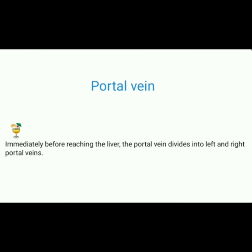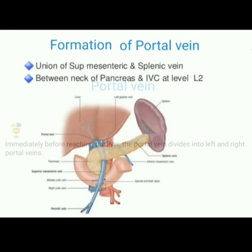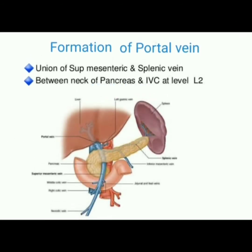Immediately on reaching the liver, the portal vein divides into left and right portal veins. Formation of portal vein: the portal vein is formed by the union of the superior mesenteric vein and splenic vein, between the neck of the pancreas and inferior vena cava, at the level of lumbar vertebra two.